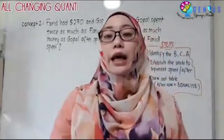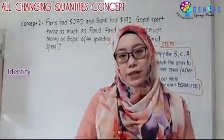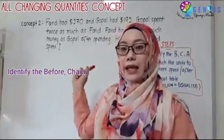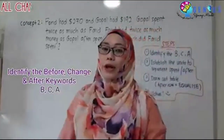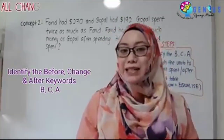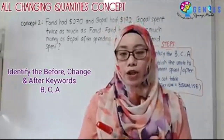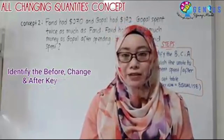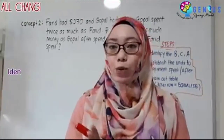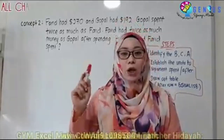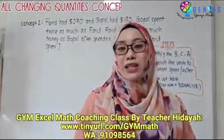The keywords either ask what the person has in the end, at first, or what is spent. In this case, the question is asking how much this boy spent. Spent is a change keyword. It is very important that your child is able to identify the before, the change, and the after keywords. So this is the All-Changing Quantities concept. Let's try out this question.